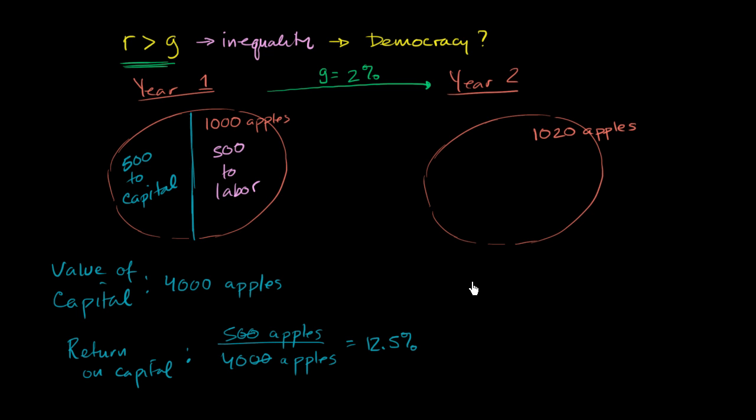Let's just say that the value of the capital, that all of it was reinvested. So now the value of capital is 4,000 plus 500 more apples, so 4,500 apples. They reinvested it in the business and used those extra 500 apples to go buy some more machinery or buy some more land.